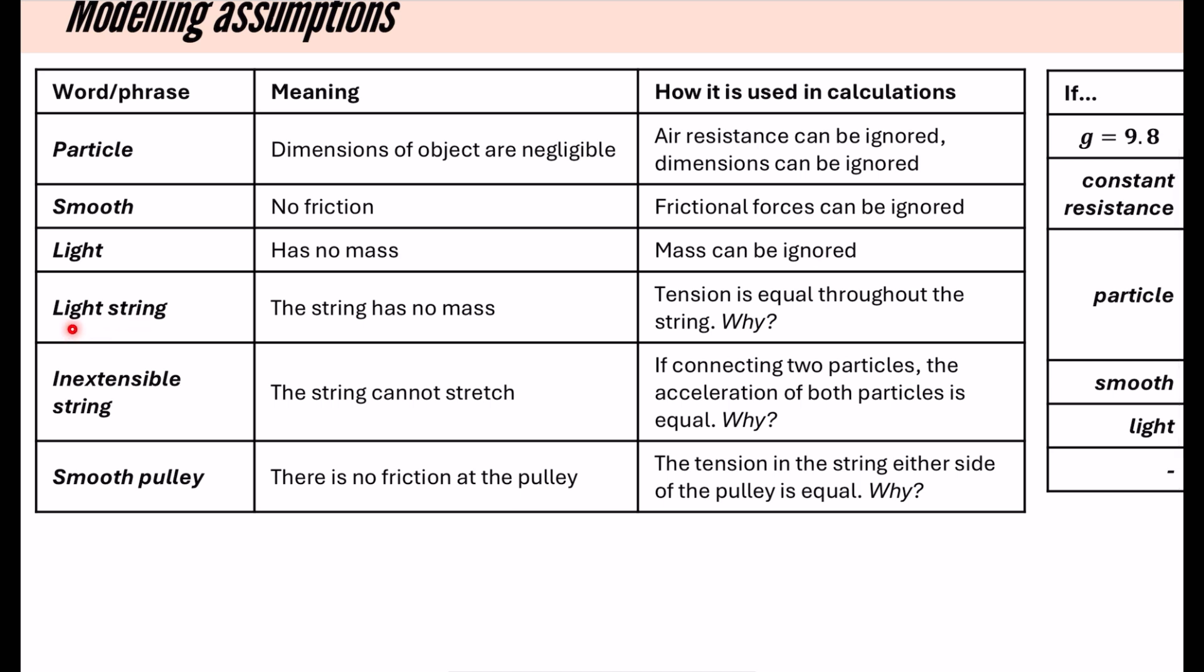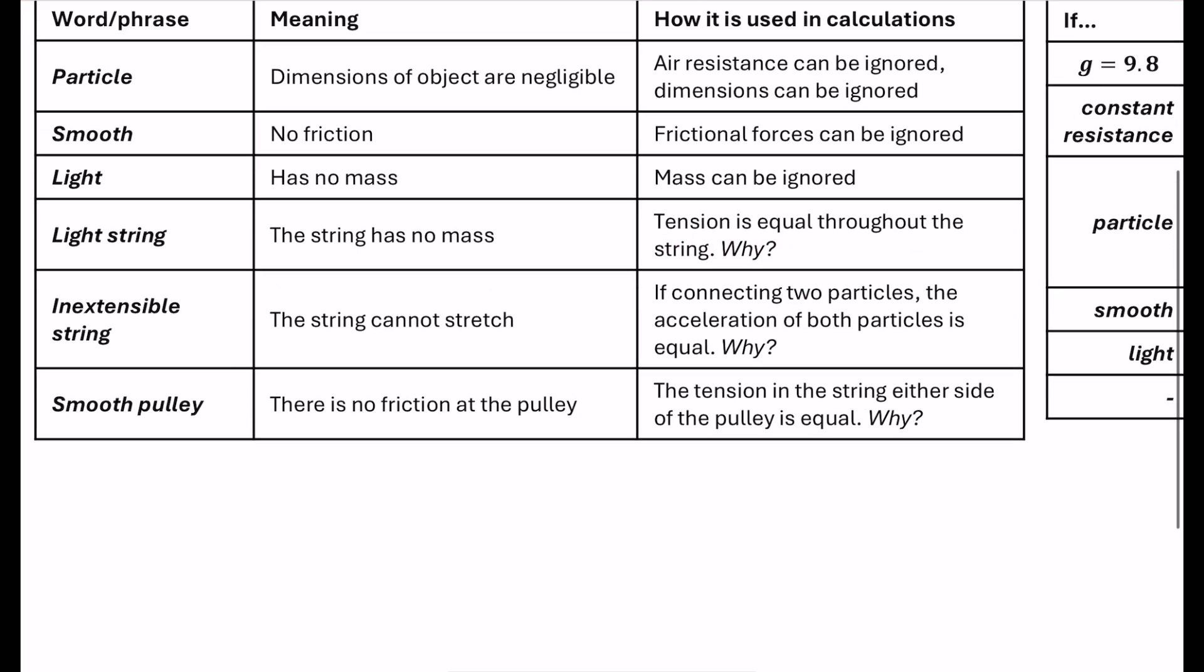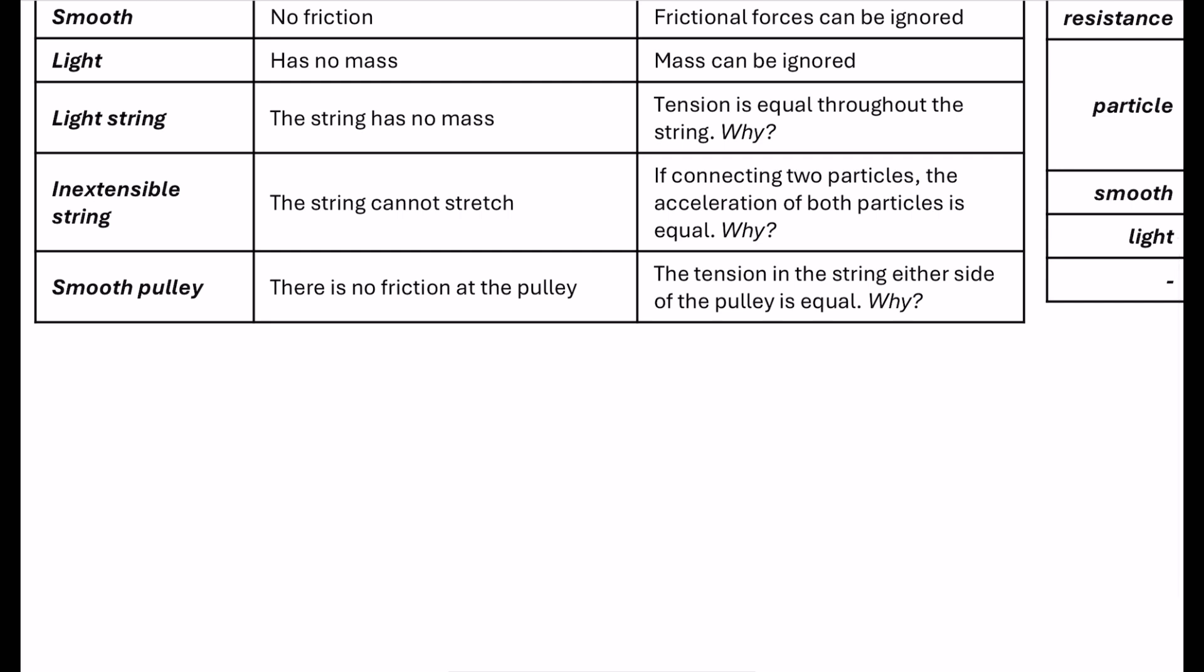So for example, the first one that we have here is a light string, which most people would say, how have you used this in your calculations? Most people write down that the string has no mass, but this is not correct. What we actually need to say for this question, how it's used in calculations, is that the tension is equal throughout the string. Now, why is that? Because if I can explain why, you might be able to understand a bit better. So with a light string, let's imagine that we've got a mass here and we've got a box that's been attached to that mass.